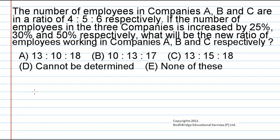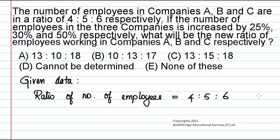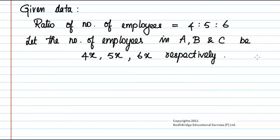Option D: Cannot be determined. Option E: None of these. Let us write down the given data. The ratio of number of employees in companies A, B, and C is 4:5:6. Let the number of employees in companies A, B, and C be 4x, 5x, and 6x respectively.